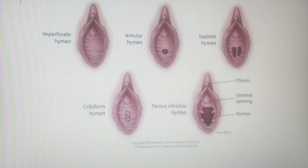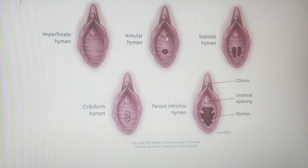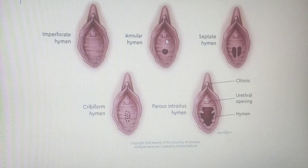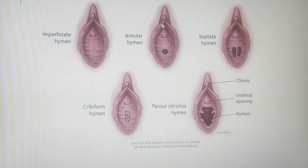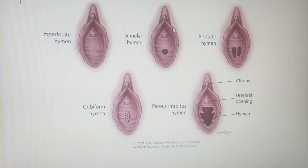The hymen is a mucosal tissue that closes the opening of the vagina — the introitus. It partially covers the vaginal opening. In olden days it was used to test virginity.